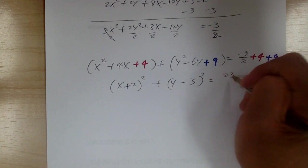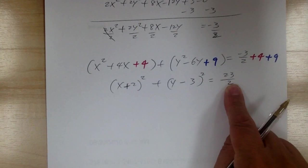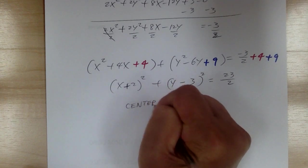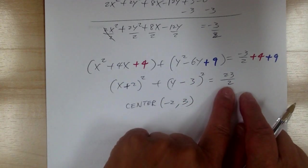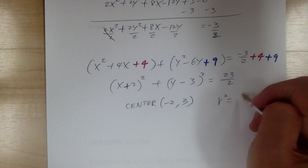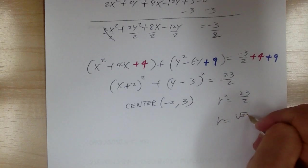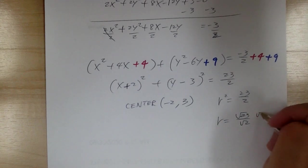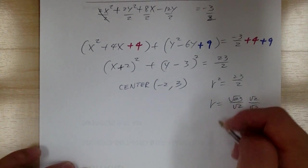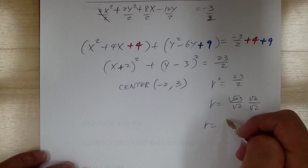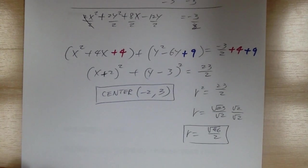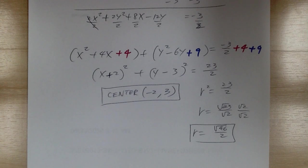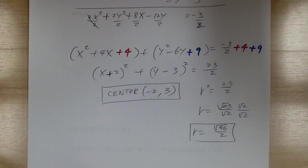The center is found by setting each term to zero: center = (−2, 3). The right-hand side is r² = 23/2, so r = √(23/2). Simplifying: r = √46 / 2. That gives us the center and radius for this circle.